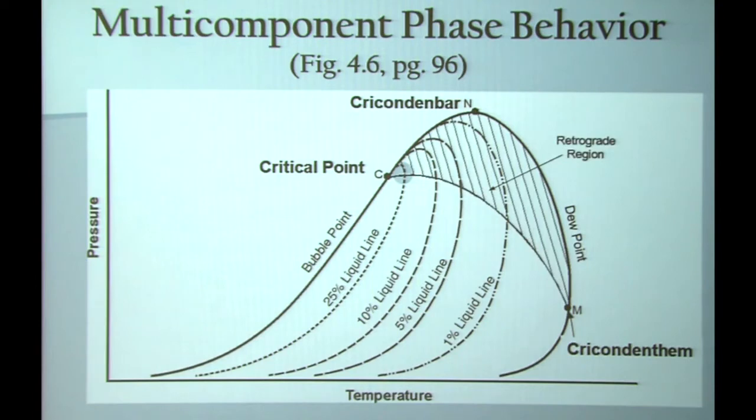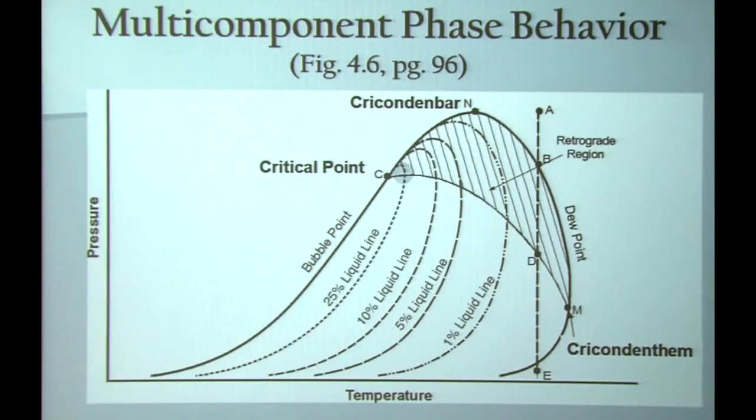If you were to take a vertical tangent through all the quality lines and connect them, you would end up with a curve such as this which defines the retrograde region. Retro means reverse and grade means temperature. Very weird things happen in this region and if you don't understand the retrograde region, you will have a great deal of difficulty trying to troubleshoot operations in your facility.